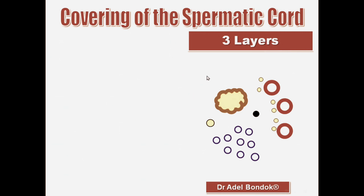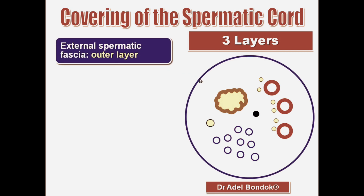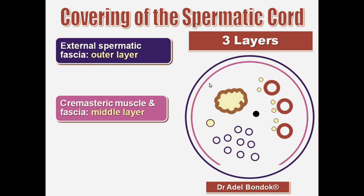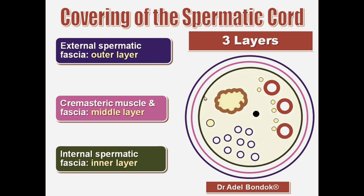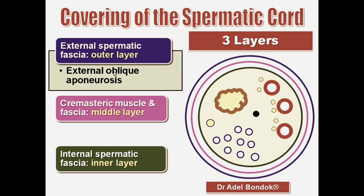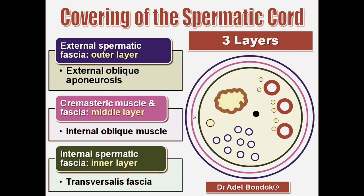Regarding the covering of the spermatic cord, it is surrounded by three layers from outside inward. The external spermatic fascia is the outer layer, arising from the external oblique aponeurosis. The cremastric muscle and fascia is the middle layer, which is an extension from the internal oblique muscle. The internal spermatic fascia is the inner layer, an extension from the transversalis fascia.